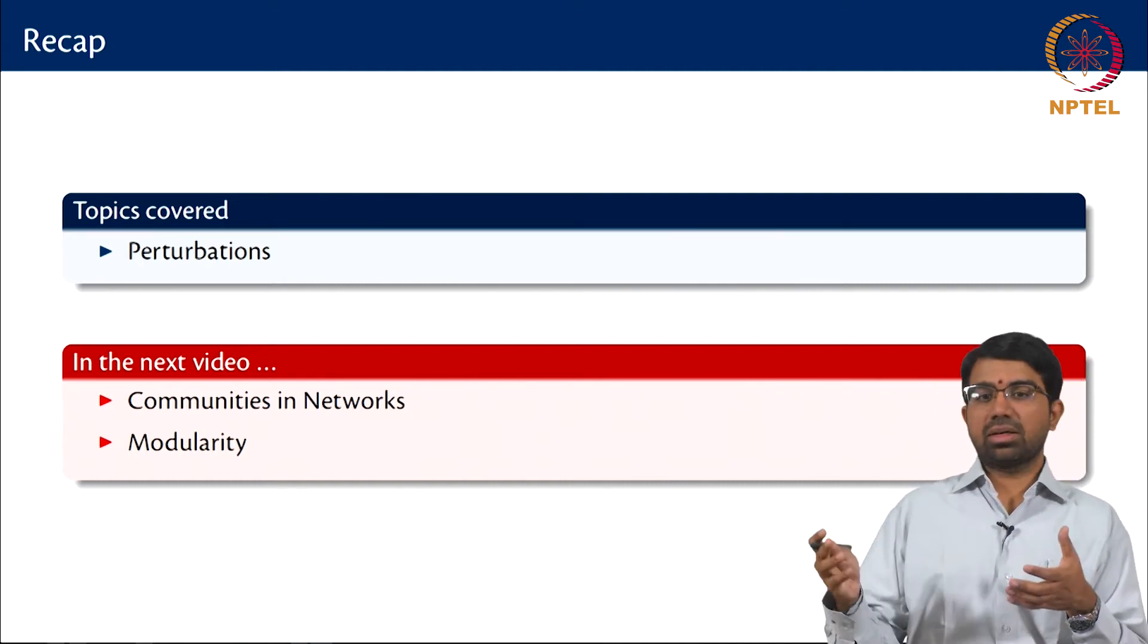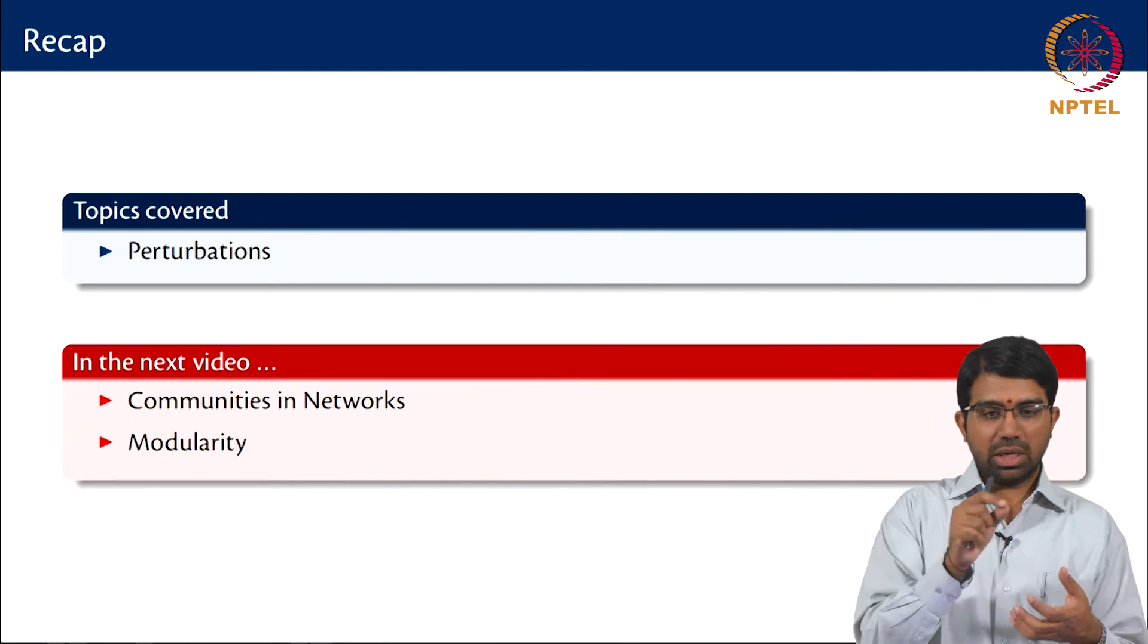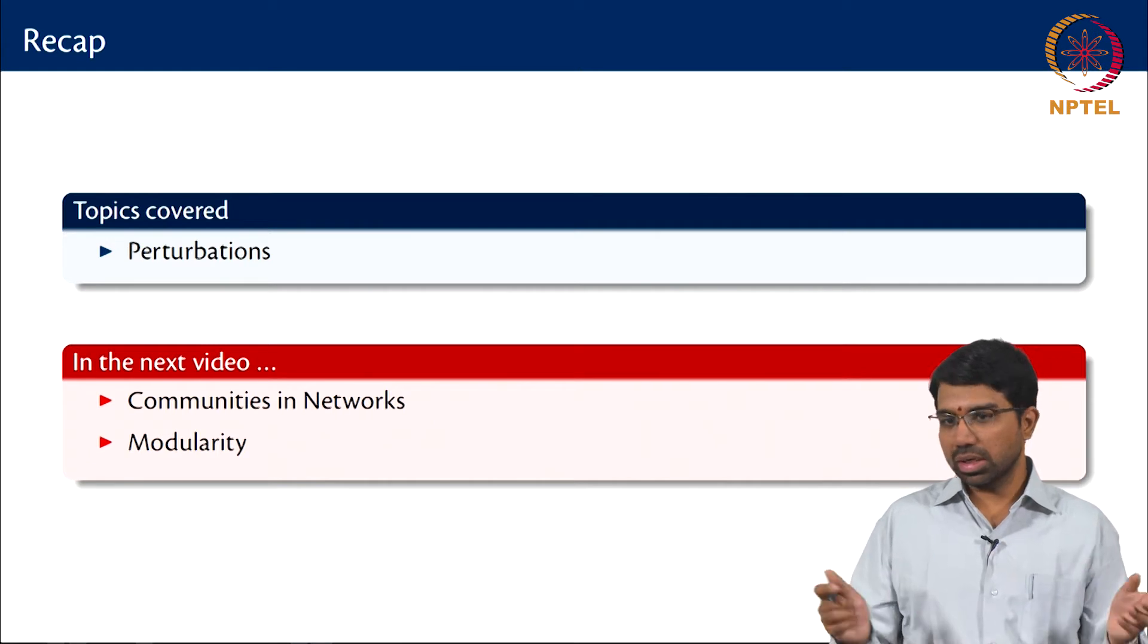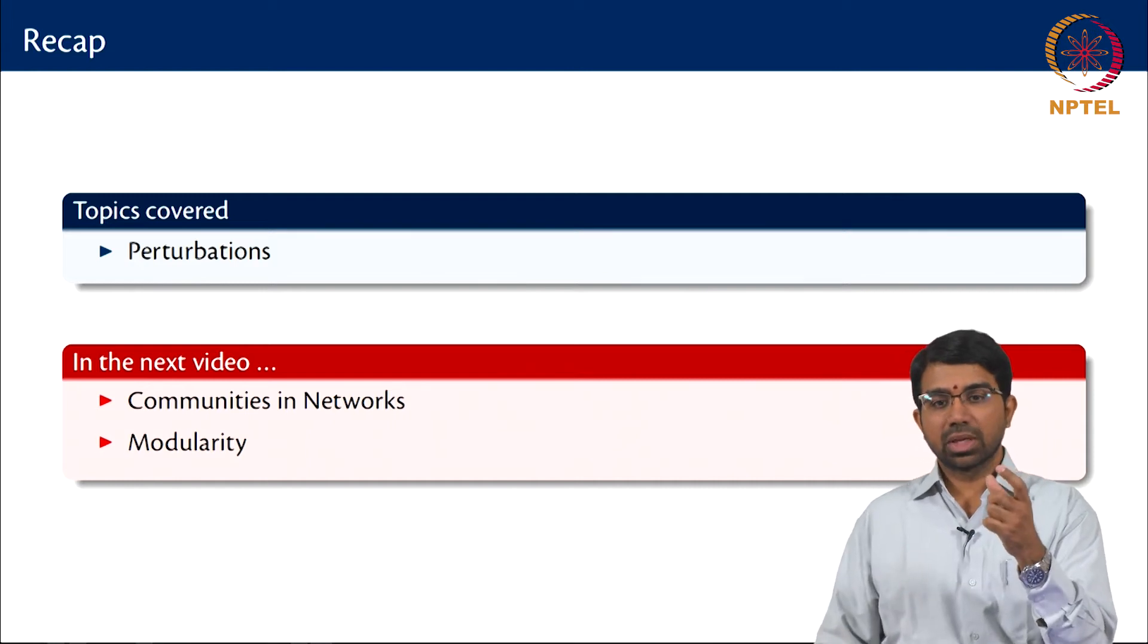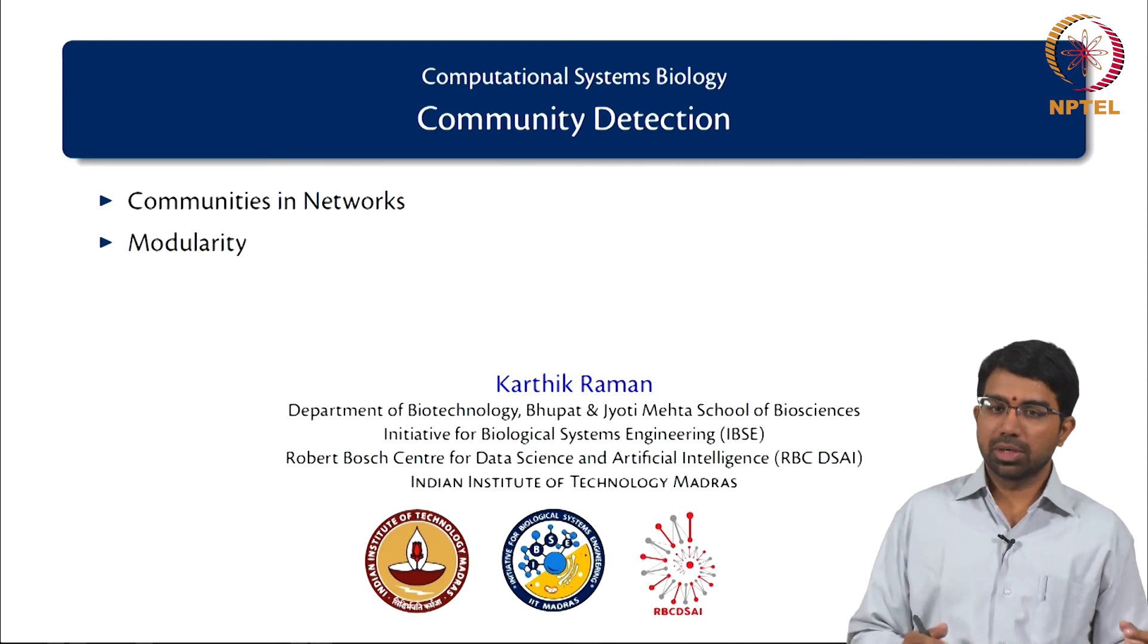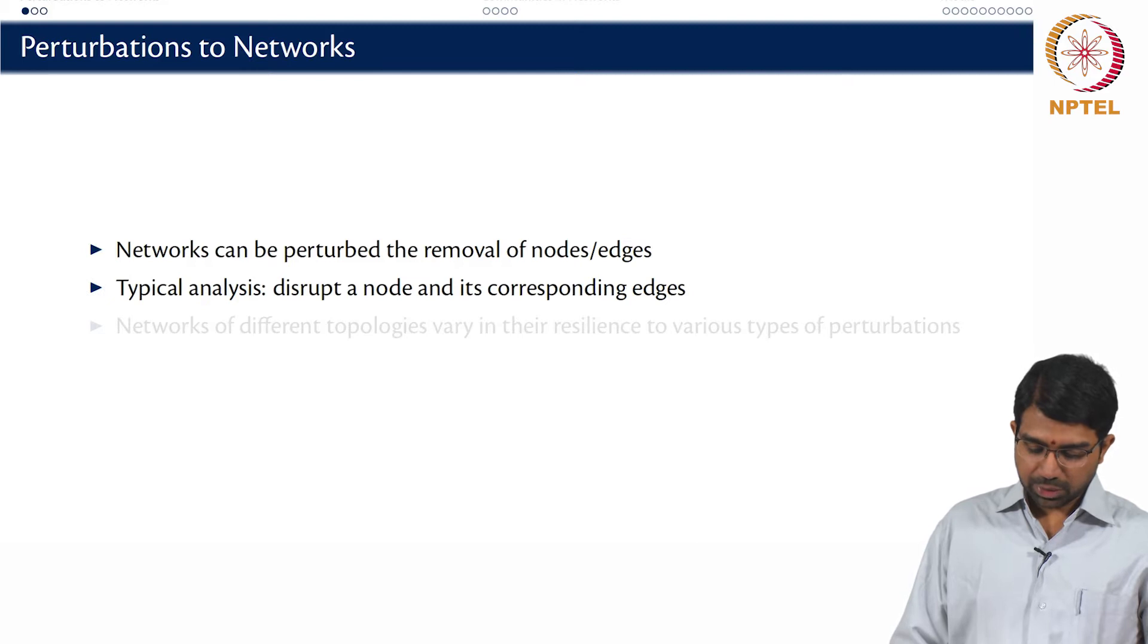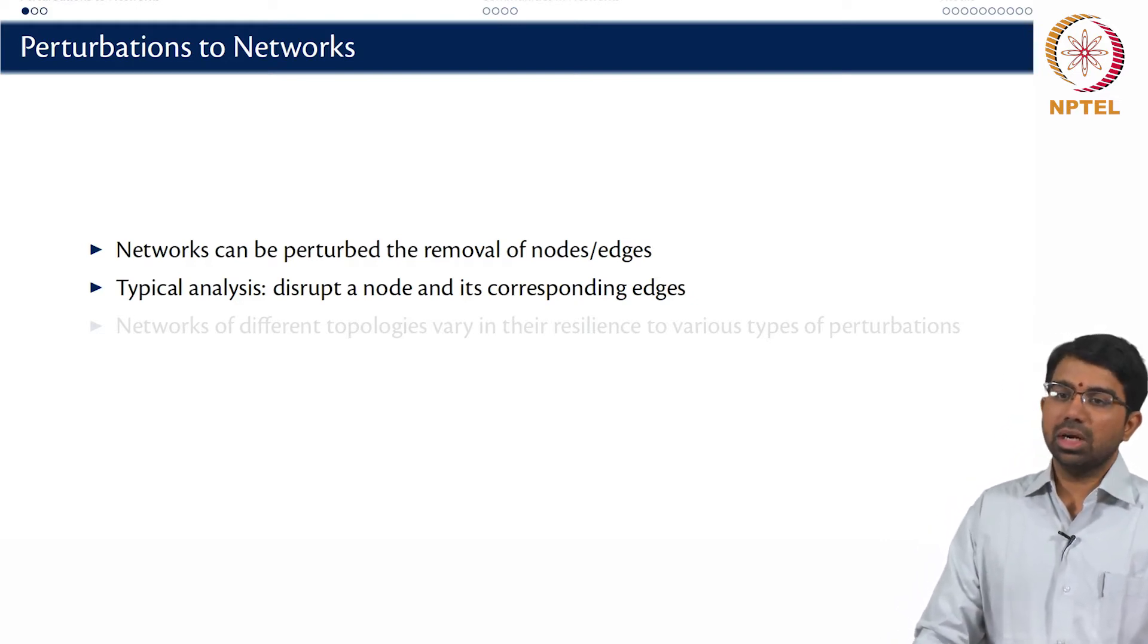So the most classic way to perturb a biological network would be to remove a node alongside all its edges. You select a node then remove it, which means all its interactions also get lost. The other interesting way to perturb a network would be to just target a single edge, remove just one edge out of a network. It's a very selective perturbation while the other idea is more of a wholesome perturbation. Networks of different types will basically behave differently when you start perturbing it.